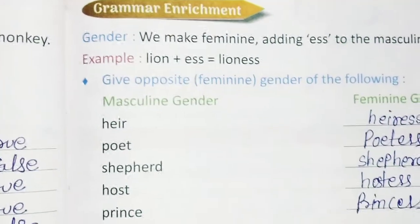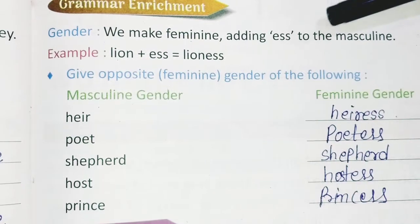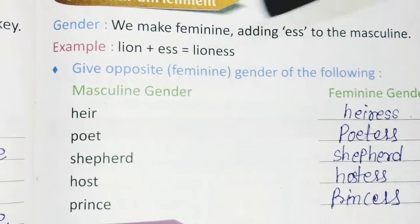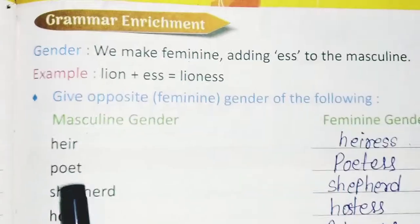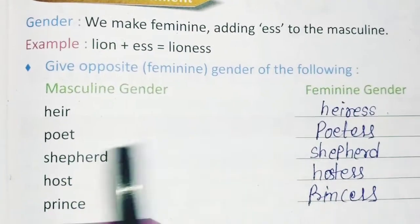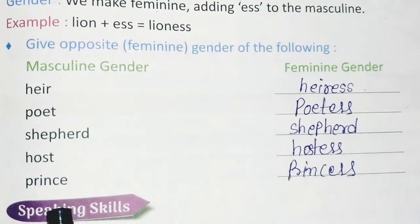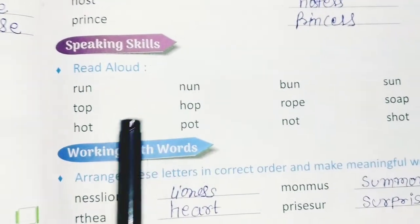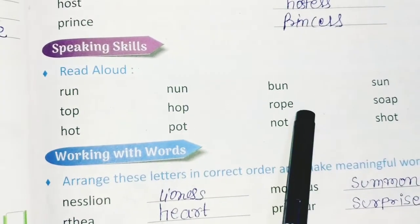Grammar Enrichment — Gender: To make the feminine form, add '-ess' to the masculine word. Example: Lion → Lioness. Convert masculine to feminine: Heir → Heiress, Poet → Poetess, Shepherd → Shepherdess, Host → Hostess, Prince → Princess.